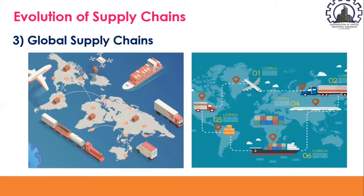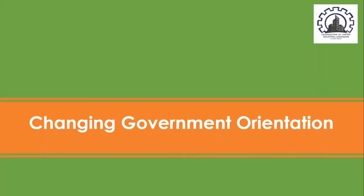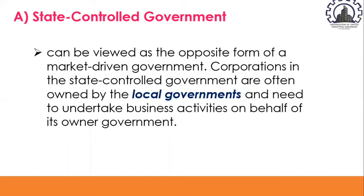The next key area is changing government orientation. Although there are numerous variations on the basic form of government, we will consider only two predominant forms: first, state-controlled — such as communism — and second, market-driven — such as democracies. Let us discuss them one by one, starting with state-controlled government.